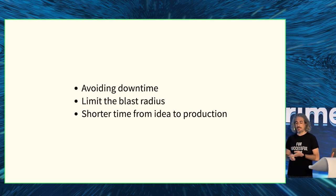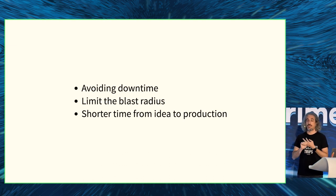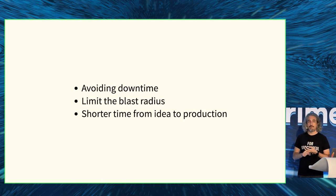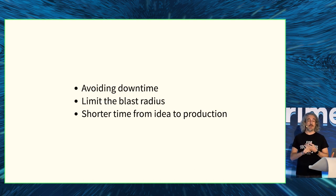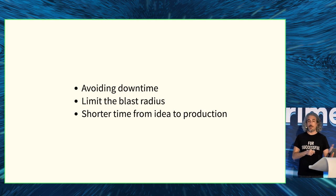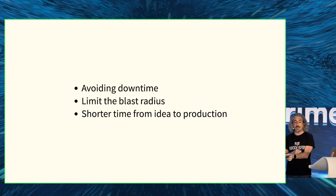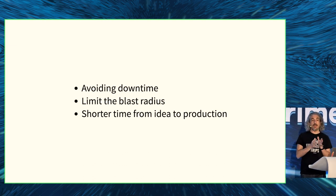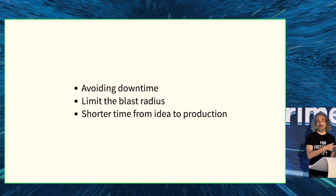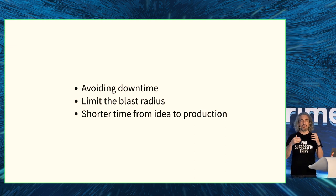Three key parts to this: avoiding downtime — you make a change, it is bad because everybody makes mistakes, you limit the blast radius so only a percentage of your users are going to see the problem, or they'll see it for a very short period of time. But it also allows you to ship code faster — you have some idea, you commit it, and because you have this safety net, you can move faster.